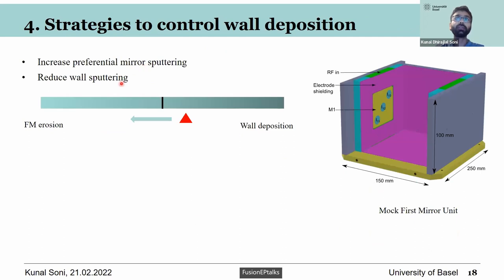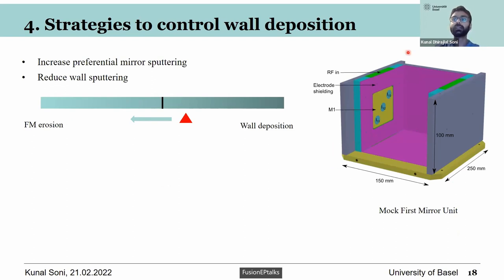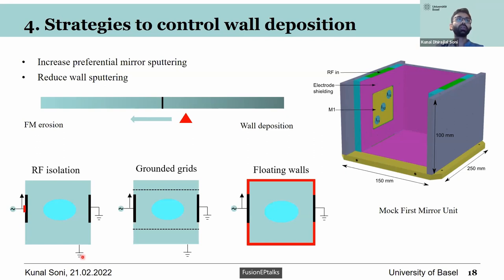We need to find solutions to solve this, either by increasing preferential mirror sputtering or by reducing wall sputtering — in effect, shifting the balance back towards mirror erosion rather than wall deposition. For this, we designed a first mirror unit mimicking the first mirrors in ITER diagnostic systems, to demonstrate that findings would be directly applicable. I'll mainly talk about two key techniques: grounded grids and floating walls.